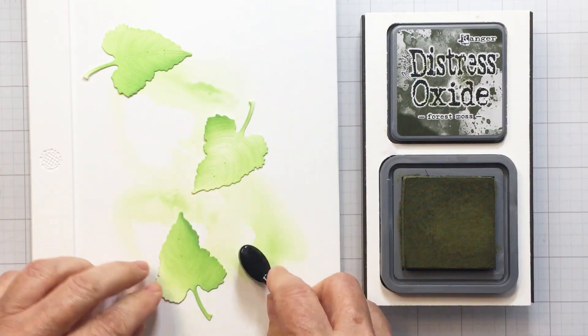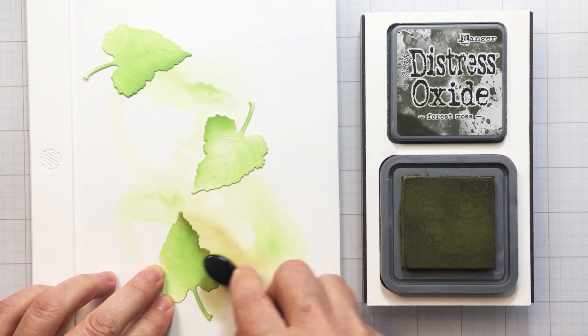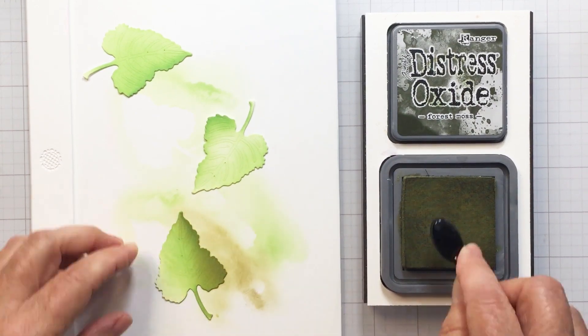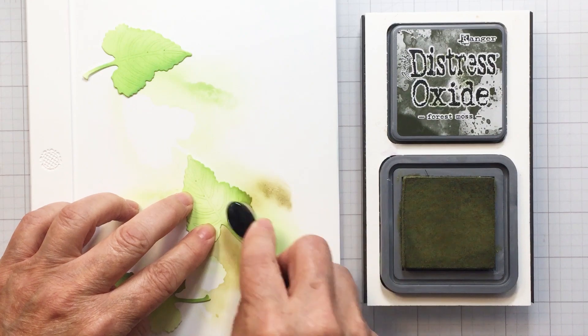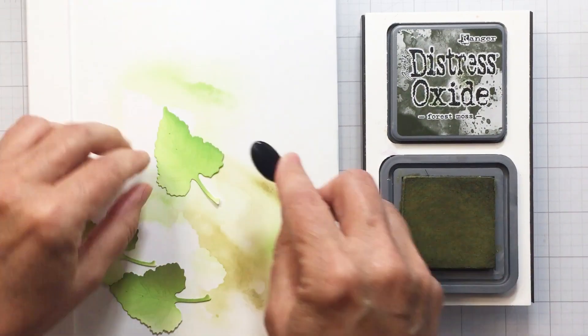I didn't really care if it was like light and shadow accurate when it goes onto my card. I just wanted to give the leaves just a little bit of depth in this way. So now I'm just going in with a little forest moss and you can see again I'm using my detail blending brushes from Honey Bee.